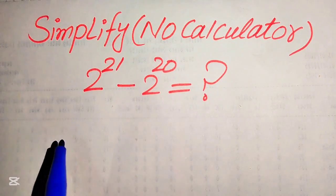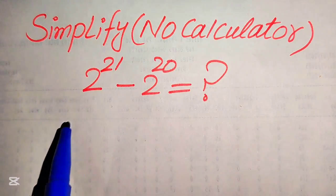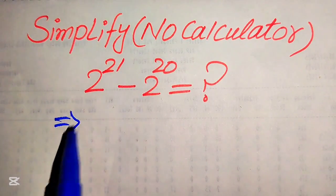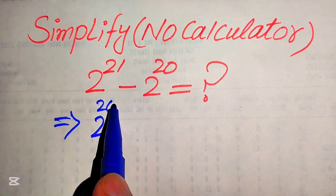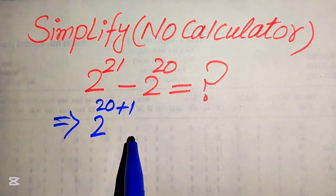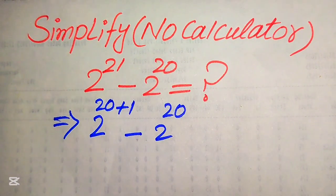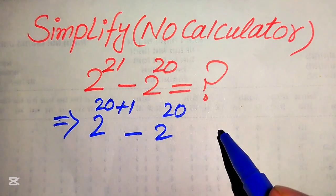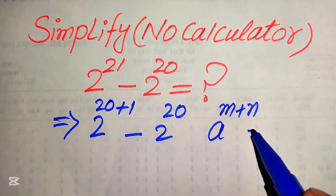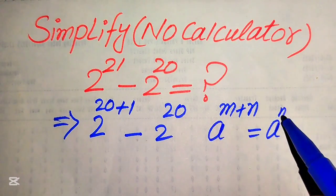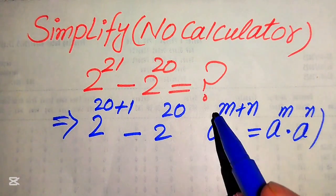The very first thing we are going to do is focus on the exponent of the first term. We will break the exponent of this term: since it is 21, we write it as 2 to the power of 20 plus 1, minus 2 to the power of 20. Now we use the exponent law: a to the power of m plus n equals a to the power of m multiplied by a to the power of n.